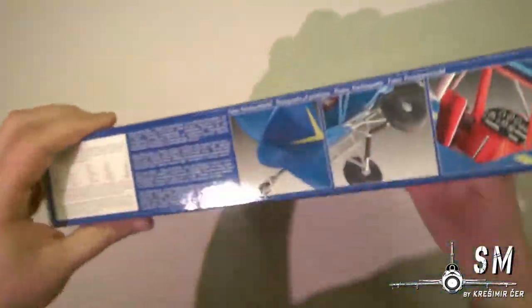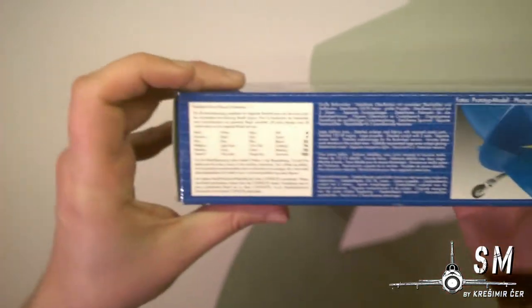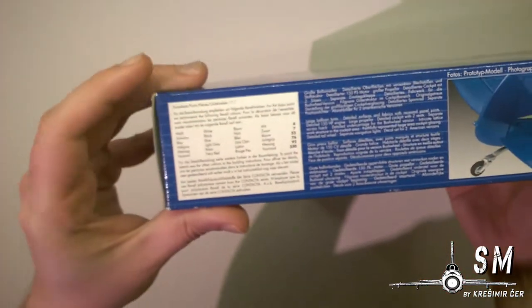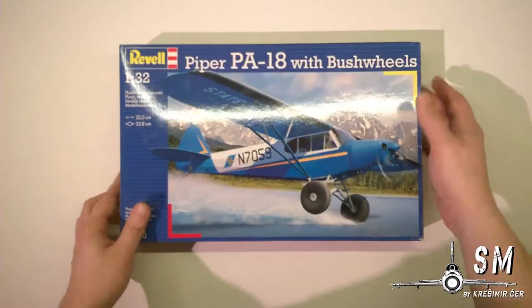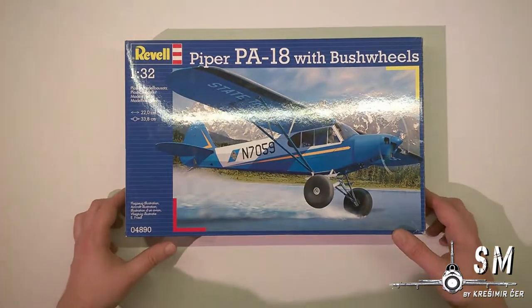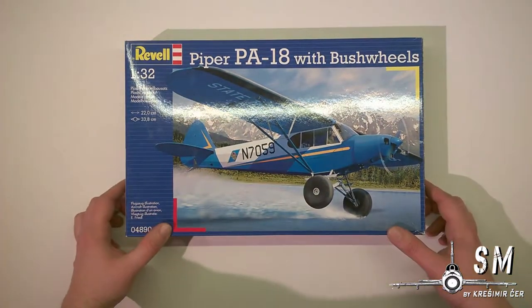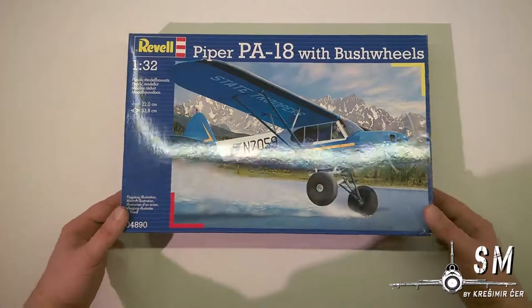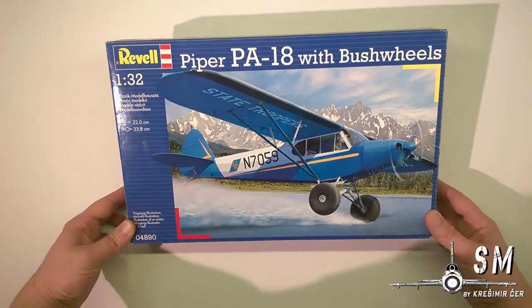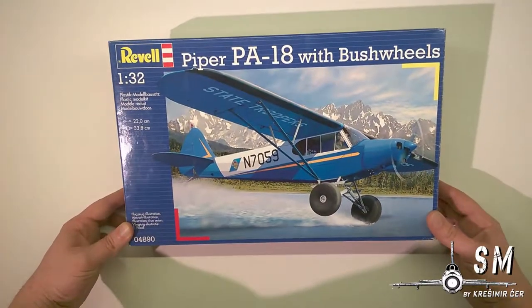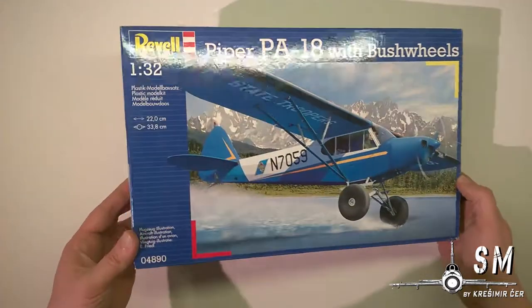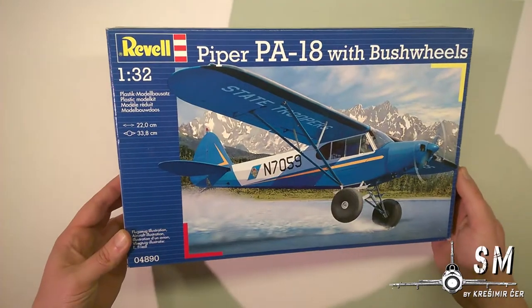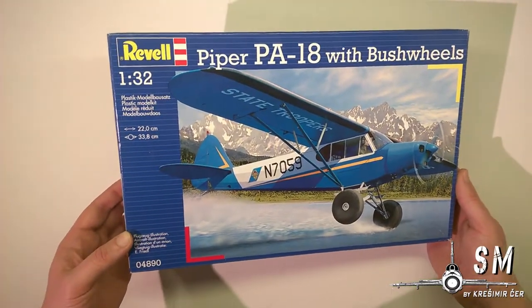On the other side of the box we can see some basic color callouts and pictures of a completed model. This kit was around 30 bucks and for the guys in Europe around 25 euros in the store. You can probably find it cheaper on eBay or Amazon if you look for a good deal.